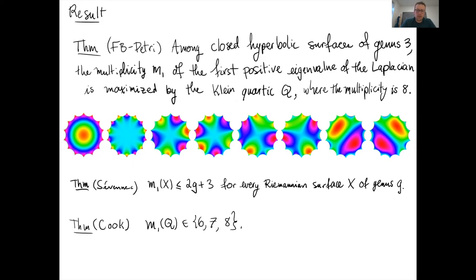The context of this theorem is as follows. There's a long chain of inequalities proven for the multiplicity of the first positive eigenvalue, starting with Chang, then improved by Besson, then by Nadirashvili, and then the latest general improvement was due to Sivanic, who showed that M₁ is always bounded above by 2G + 3 for any Riemannian surface of genus G. For G = 3, this comes out equal to 9, so our theorem is an improvement from 9 to 8, but we have to restrict to closed hyperbolic surfaces only.